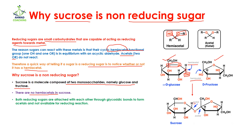As a result, this hemiacetal group is going to be converted into an acetal group. Here we can see we have a carbon, we have this –OR, and we have this –OR. We said that acetal means when two –OR groups are attached with one carbon, it means an acetal group is present. So in sucrose, these two hemiacetal groups are fused with each other to form an acetal group, and because of the presence of this acetal group there is no hemiacetal group and there is no reducing ability. Because of this reason, sucrose is a non-reducing sugar.